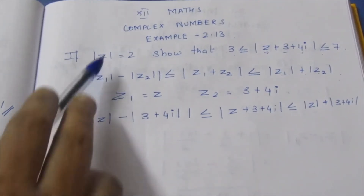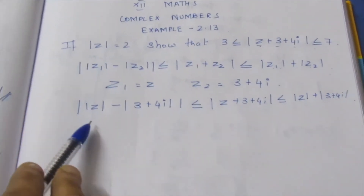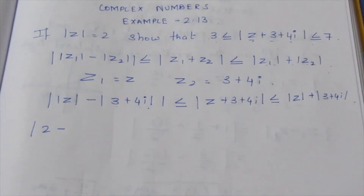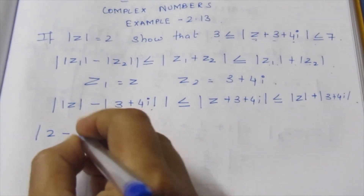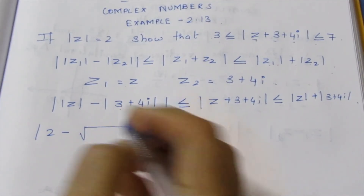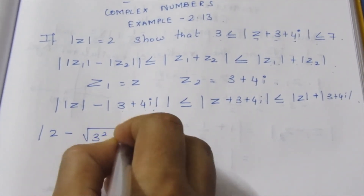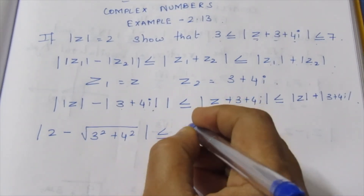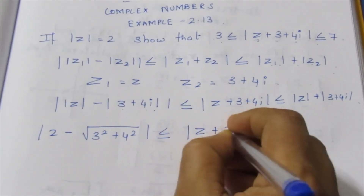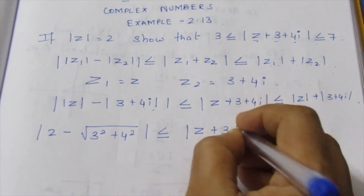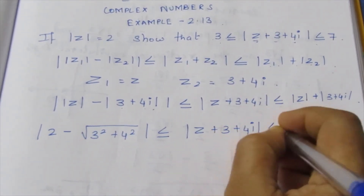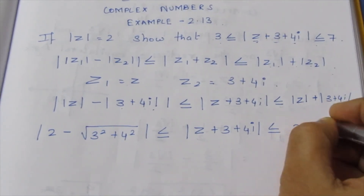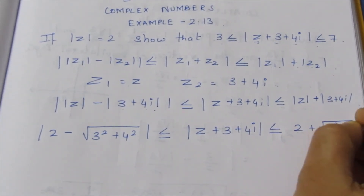Now the modulus Z2 value — the modulus formula is the square root of a squared plus b squared. So modulus of 3 plus 4i equals the square root of 3 squared plus 4 squared. We will now prove and simplify, and modulus Z2 plus root of 3 squared plus 4 squared.